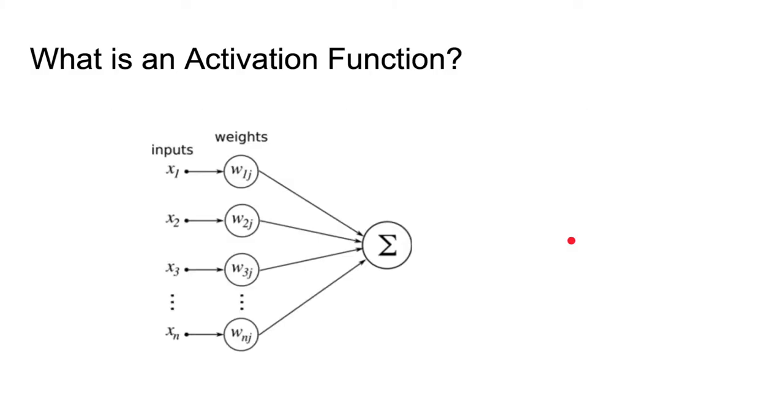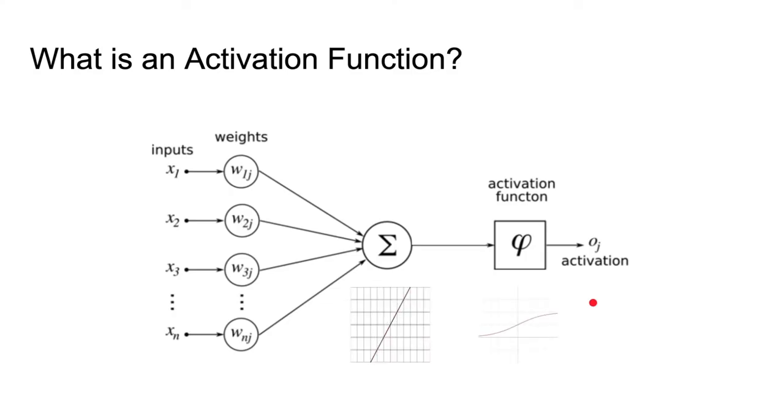So first of all, what is an activation function? You probably already know this, but let's look at it anyway. An activation function is simply the function that we apply to the outputs of a neural network. So we have the so-called input function, which is simply the sum of the multiples of the weights and inputs. And you could say that that's the identity output activation function. But we can apply some other activation function on that output as well.